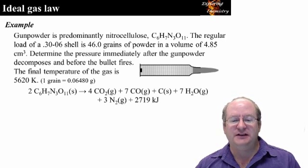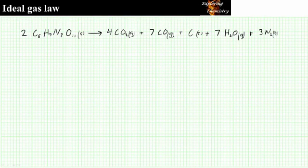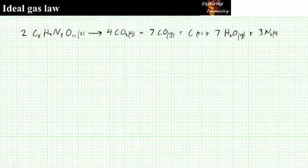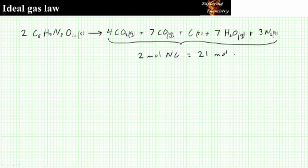Now let's apply the ideal gas law. This is real data for a 30-odd-6 cartridge. We're going to determine the pressure inside the cartridge immediately after the decomposition of the gunpowder and before the bullet discharges down the barrel. The decomposition reaction for nitrocellulose shows 2 moles of nitrocellulose reacting to produce 4 moles of gaseous carbon dioxide, 7 moles of gaseous carbon monoxide, 1 mole of solid carbon, 7 moles of gaseous water vapor, and 3 moles of nitrogen gas. A key point is that 2 moles of nitrocellulose produces 21 moles of gas in total.